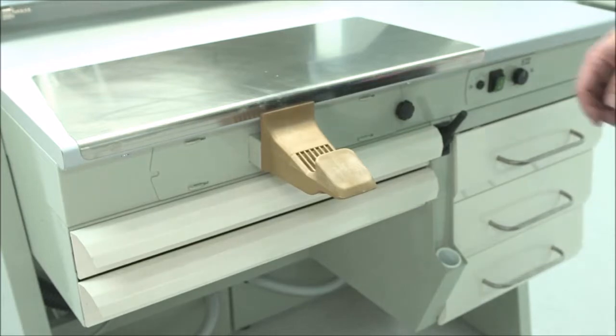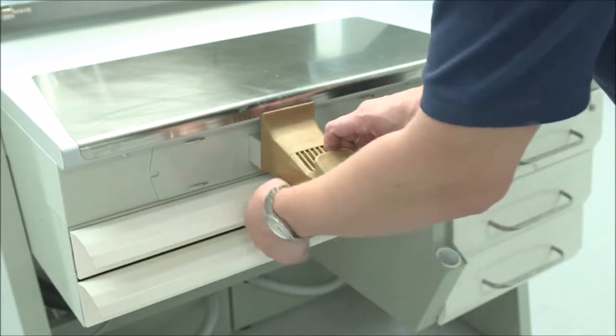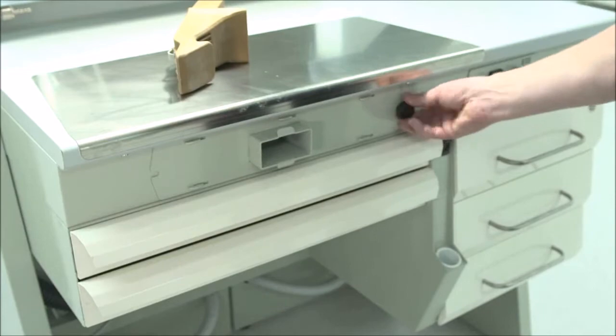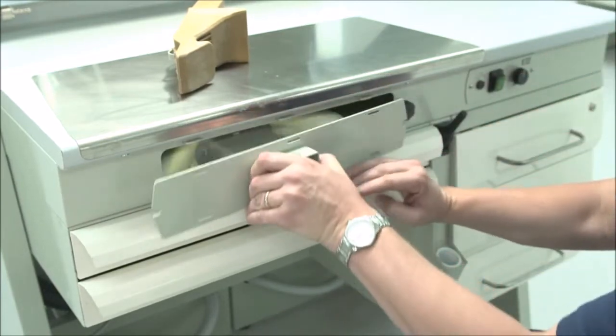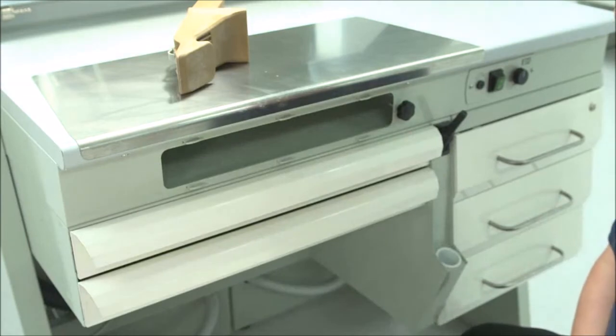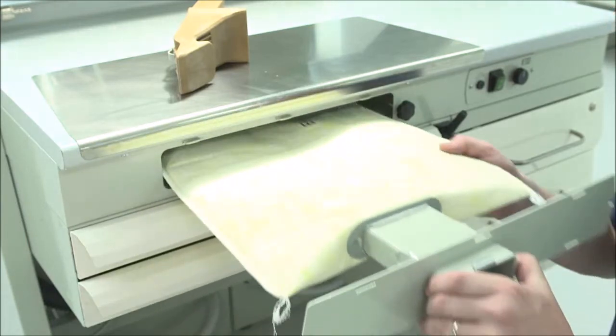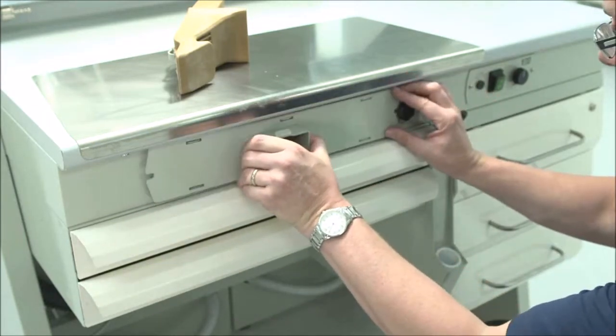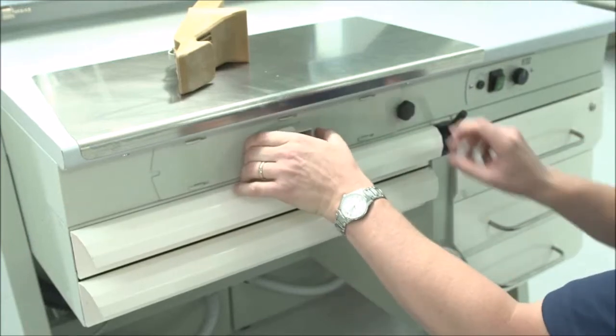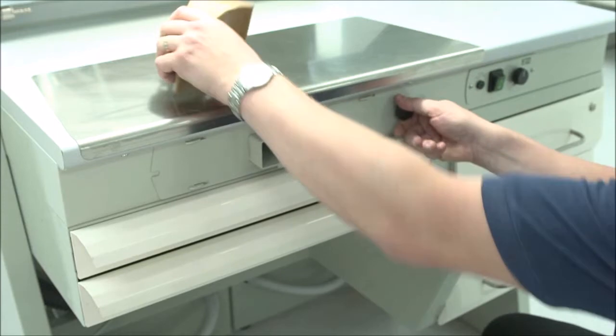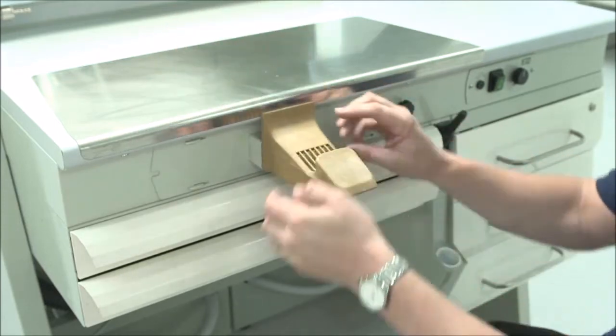To replace the filter, firstly release the bench peg, loosen the black knob to the right, push the whole panel to the left and bring forward. To replace, push the filter back in, push to the right, tighten and replace the peg.